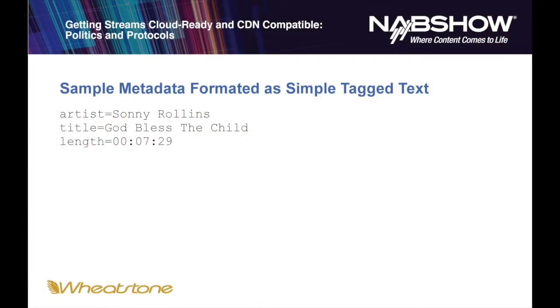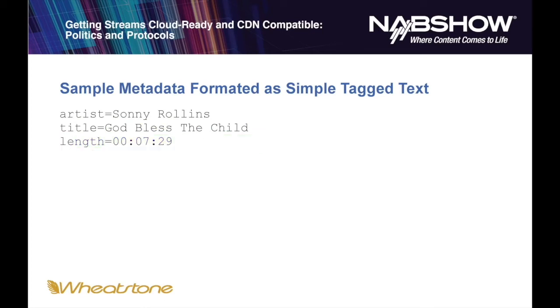Let's take a look at some metadata and what it actually looks like. Sometimes it's in the form of simple tagged text, where the tag means something like artist equals, or title equals, or length equals, or sometimes duration equals. It's a particular sequence of alphanumeric characters followed by an equal sign or a colon, and then everything after that tag up until the new line is the actual information.